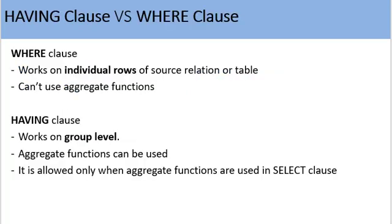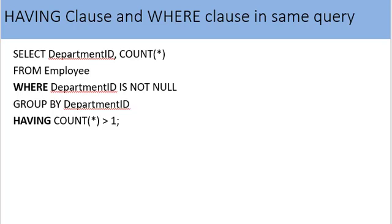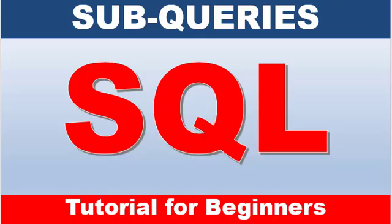What is the difference between HAVING clause and WHERE clause? WHERE clause works on the row level of the source relation, and we cannot use aggregate functions in WHERE clause. HAVING clause works on the group level, therefore use of aggregate functions is allowed. HAVING clause is only used when at least one aggregate function is used in the SELECT clause. We can use WHERE clause and HAVING clause in the same SELECT query.